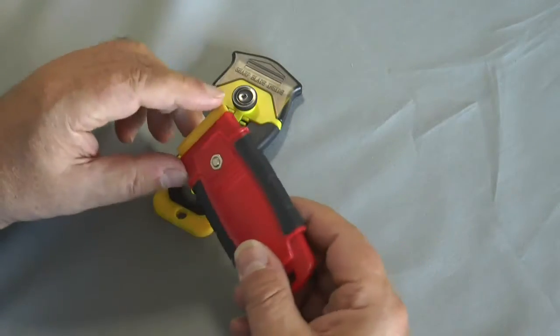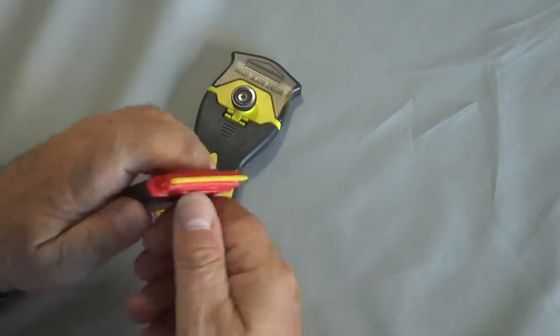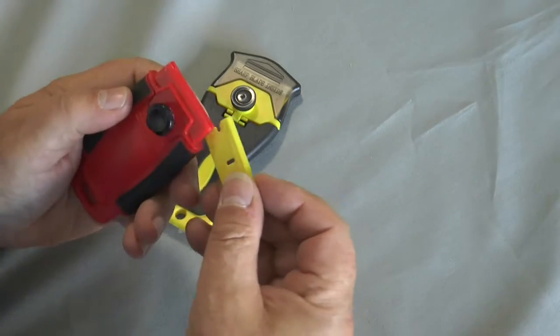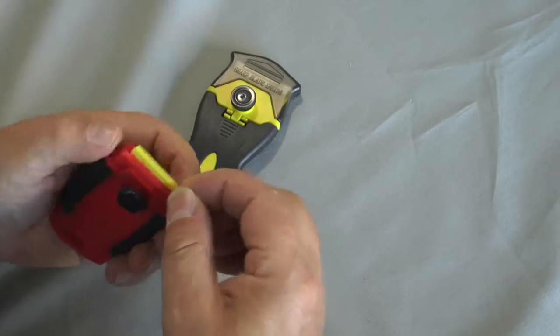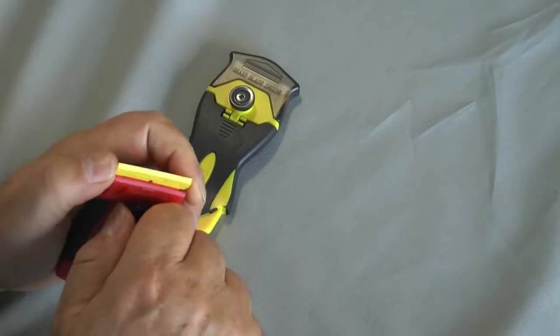It comes with a plastic cap, which we don't happen to have with us at the moment, but it holds any kind of razor blade, including plastic blades or metal blades. Just slide it in sideways, screw that down, and you're ready to go.